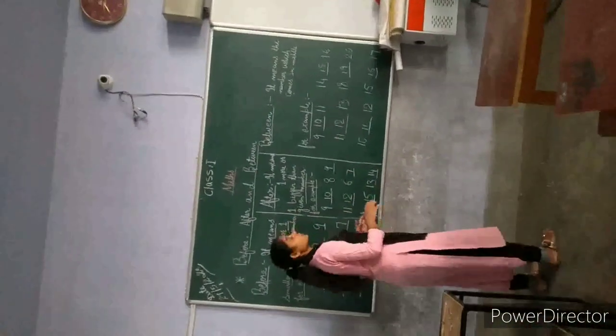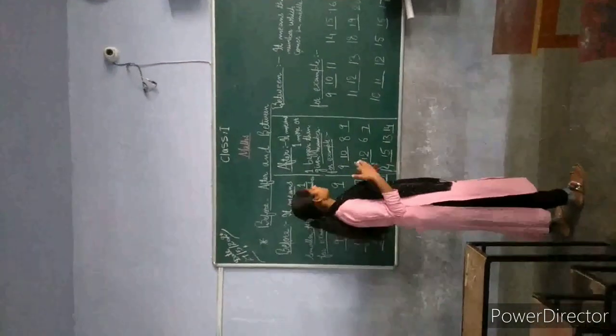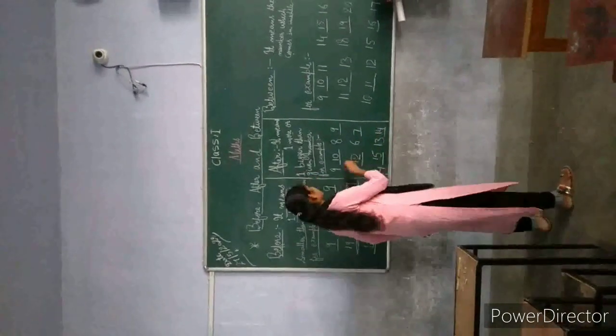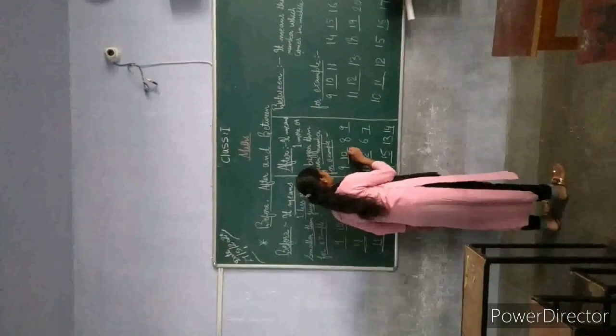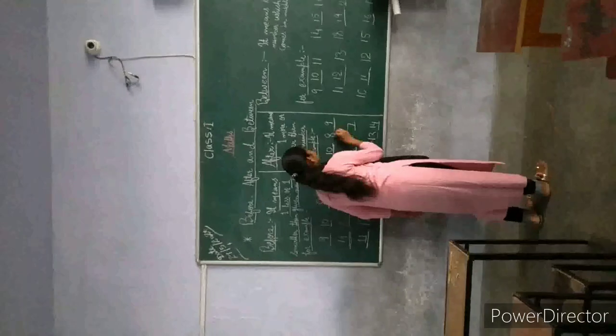The number which means one smaller than the number, which means one bigger than the number. Example: 9, 8 comes after 9, 9 comes after 8.